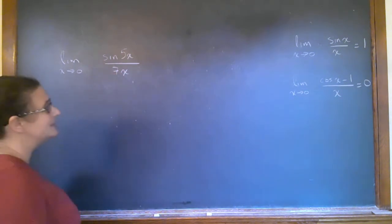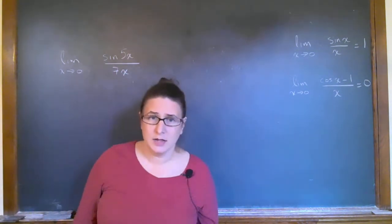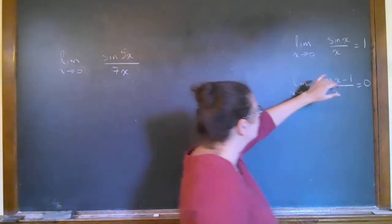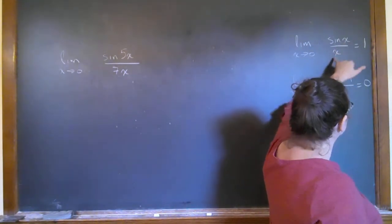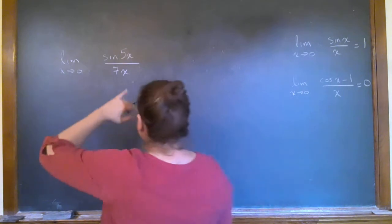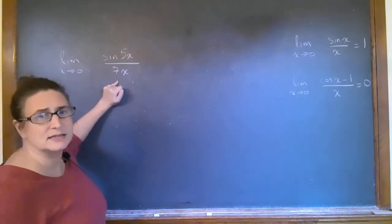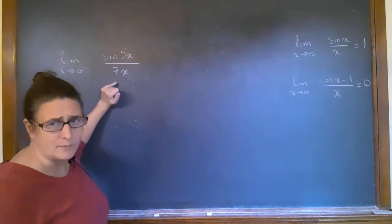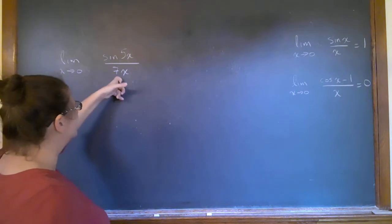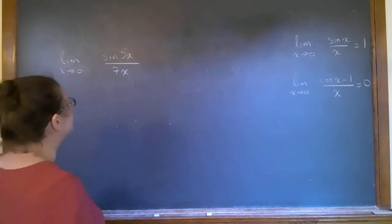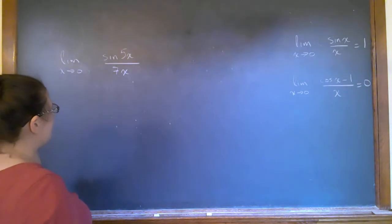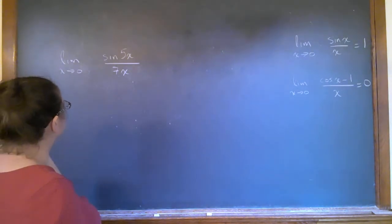Like that, but it's not entirely right because here I've got x and x, but here I've got 5x and 7x, so they're not quite the same. So I kind of need the 5x down here if I want to use that limit. Of course, the way you can do that is simply by pulling out the 7.